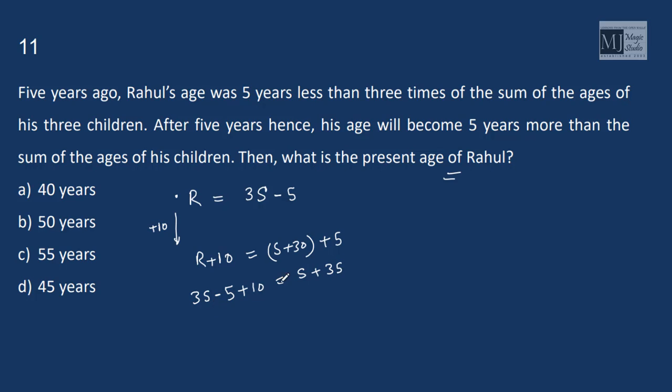So we have 3s minus 5 plus 10 equals s plus 35. 3s minus s is 2s plus 5, that is 30, so s is 15. So r was 15 into 3, that is 45 minus 5, that is 40 years, 5 years ago. So present age of r is 40 plus 5, that is 45 years.